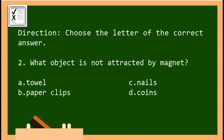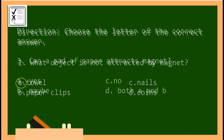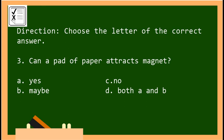For number two: what object is not attracted by a magnet? A, towel; B, paper clips; C, nails; or D, coins. For number three: the options are A, yes; B, maybe; C, no; or D, both A and B. The correct answer is letter C.